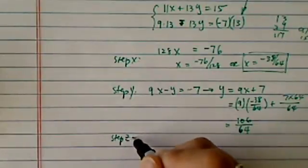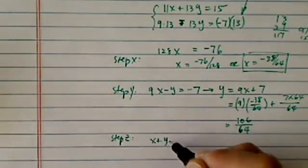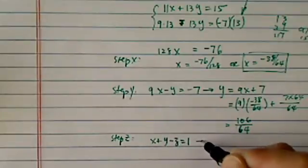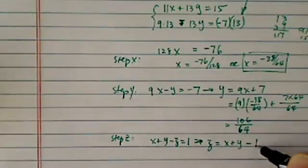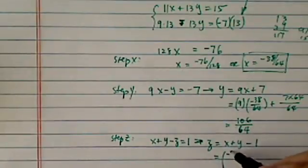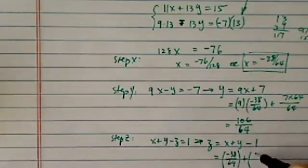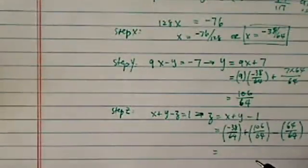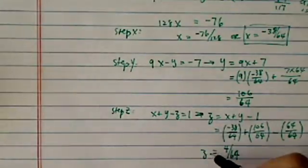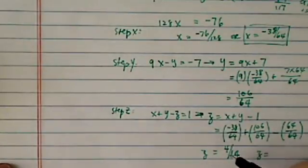Now let's do the last step for z. I have x plus y minus z equal to 1. From there, z is equal to x plus y minus 1. Let's get everything in there. x is minus 38 over 64, plus y which is 106 over 64, minus 1 which is 64 over 64. When I simplify this down a little bit, I have 4 over 64.